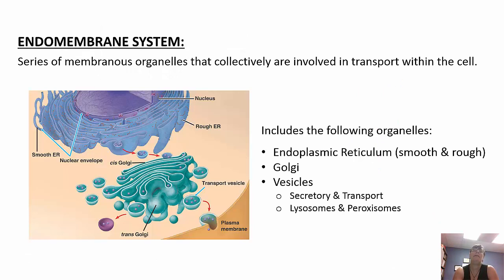The endomembrane system is a series of membranous organelles involved in transport within the cell. It includes the rough and smooth endoplasmic reticulum, the Golgi apparatus, and transport vesicles. The smooth ER makes lipids and hormones, packages them, and sends them to the Golgi. The rough ER makes proteins, packages them, and sends them to the Golgi. The Golgi modifies these products and packages them into secretory vesicles to be transported wherever needed. Lysosomes contain hydrolytic enzymes that degrade waste and worn-out organelles; peroxisomes have oxidative enzymes that detoxify and neutralize free radicals.